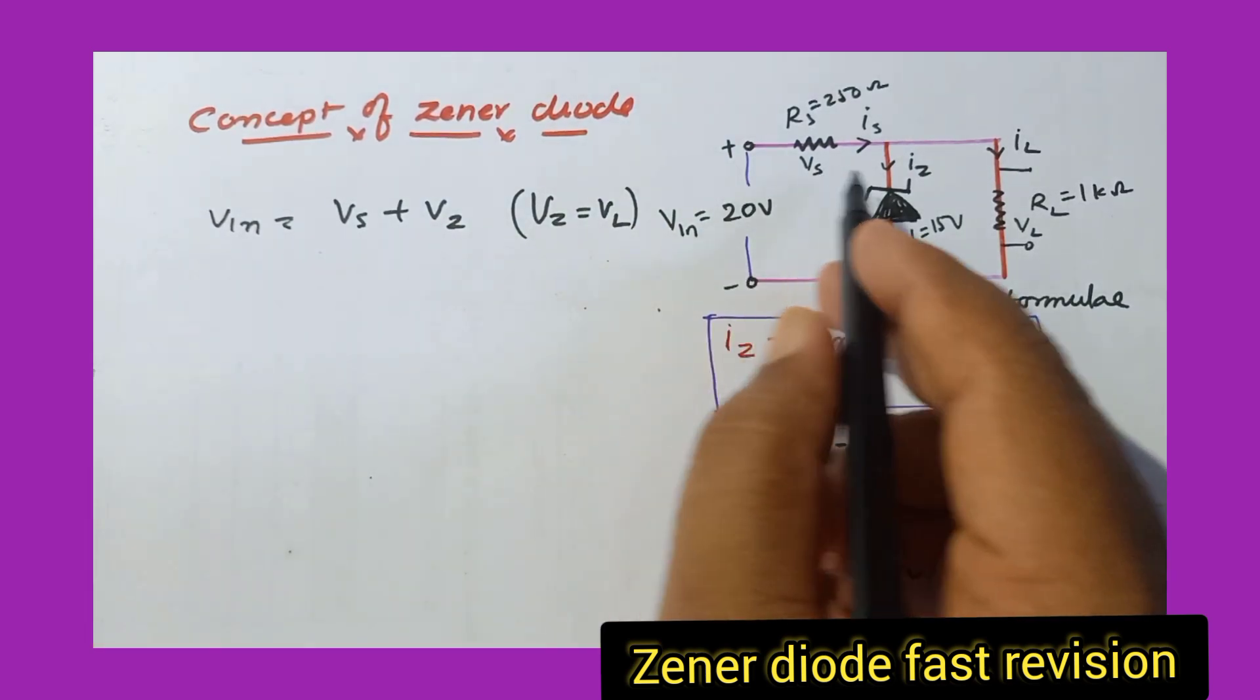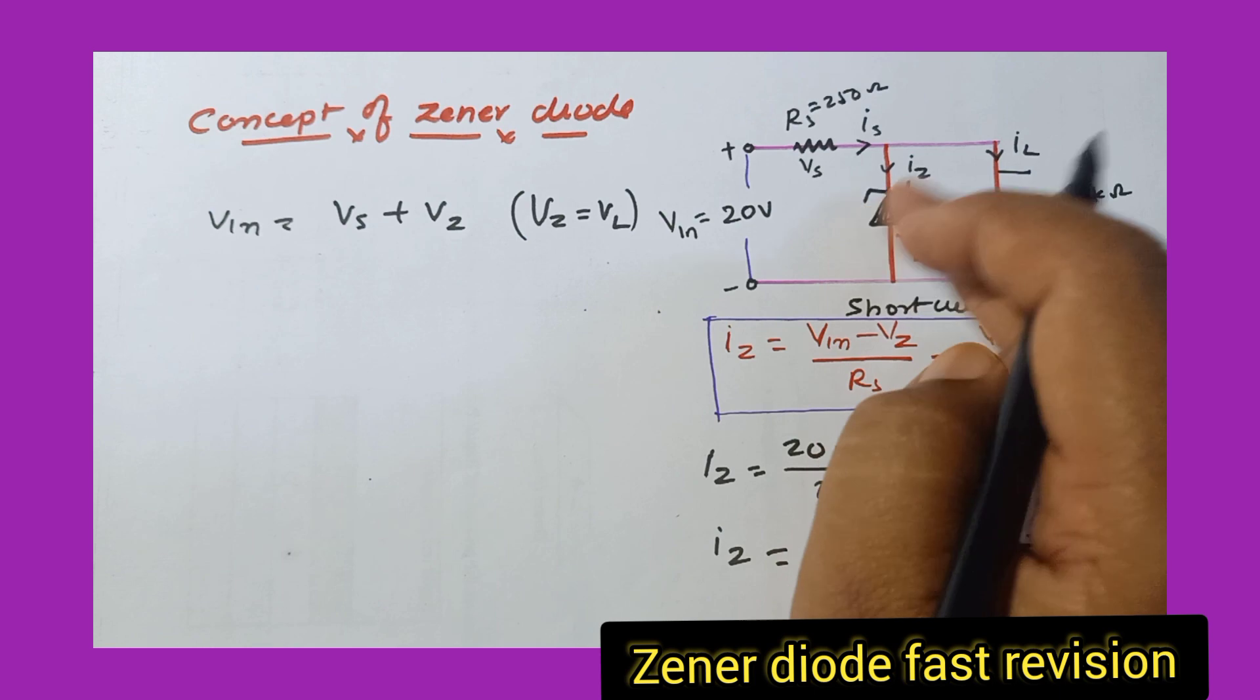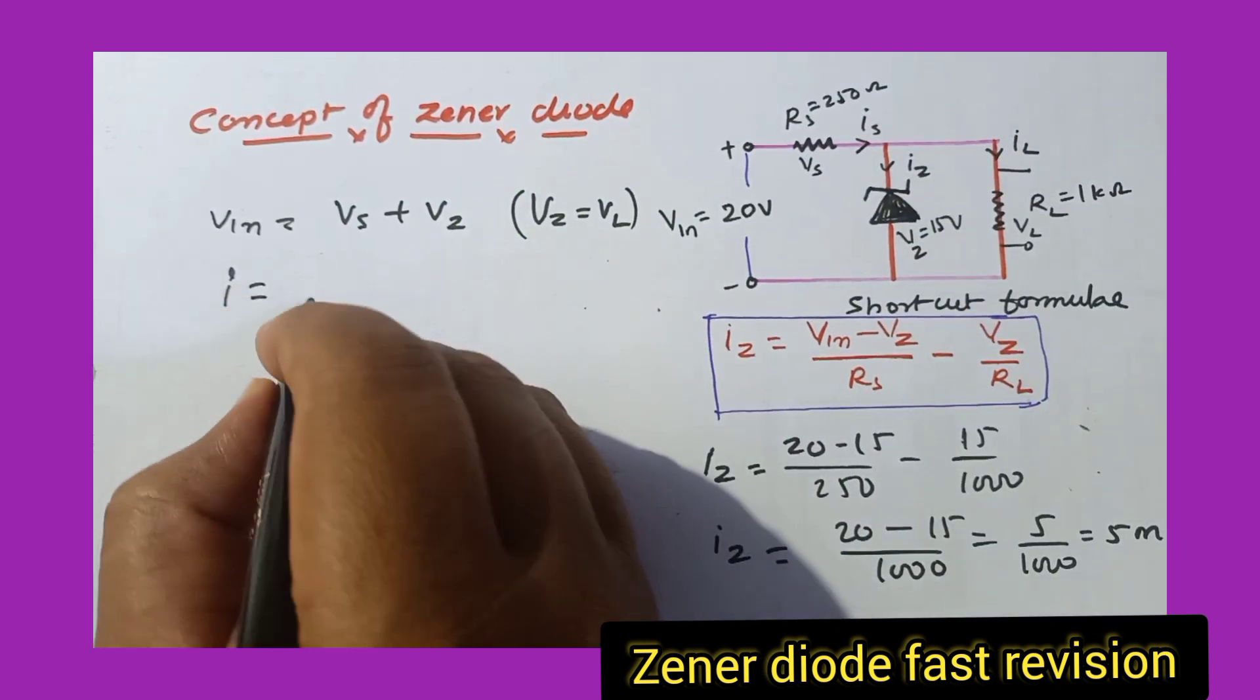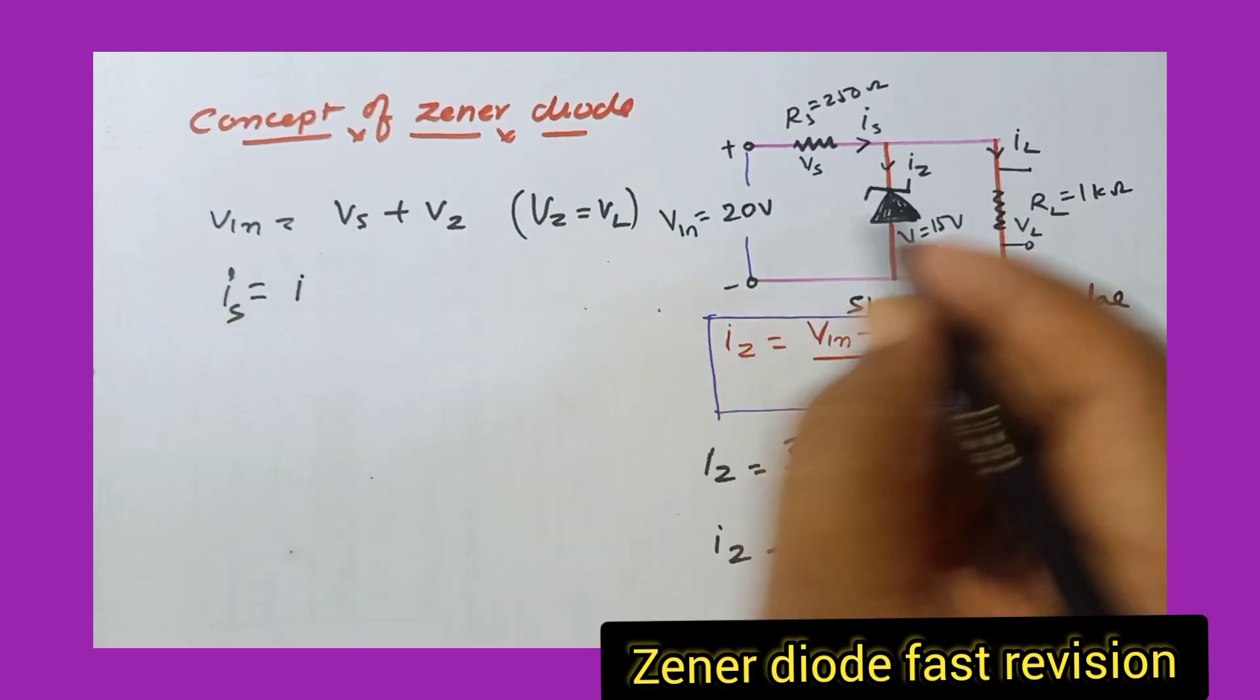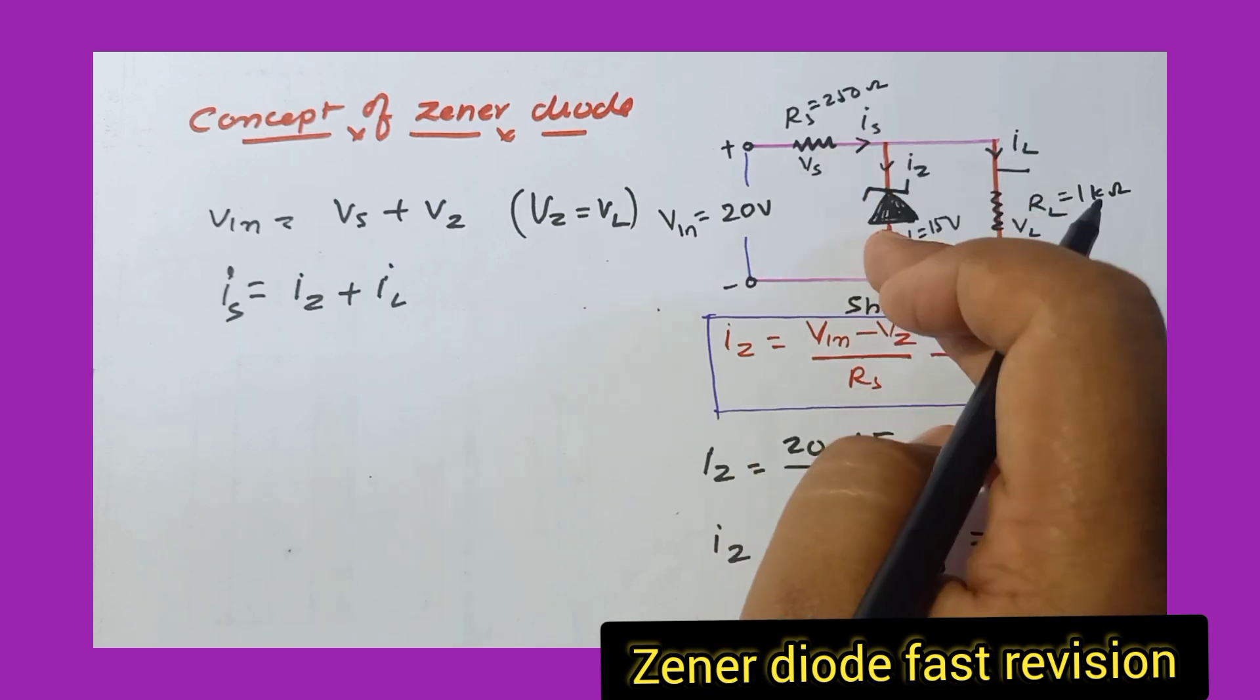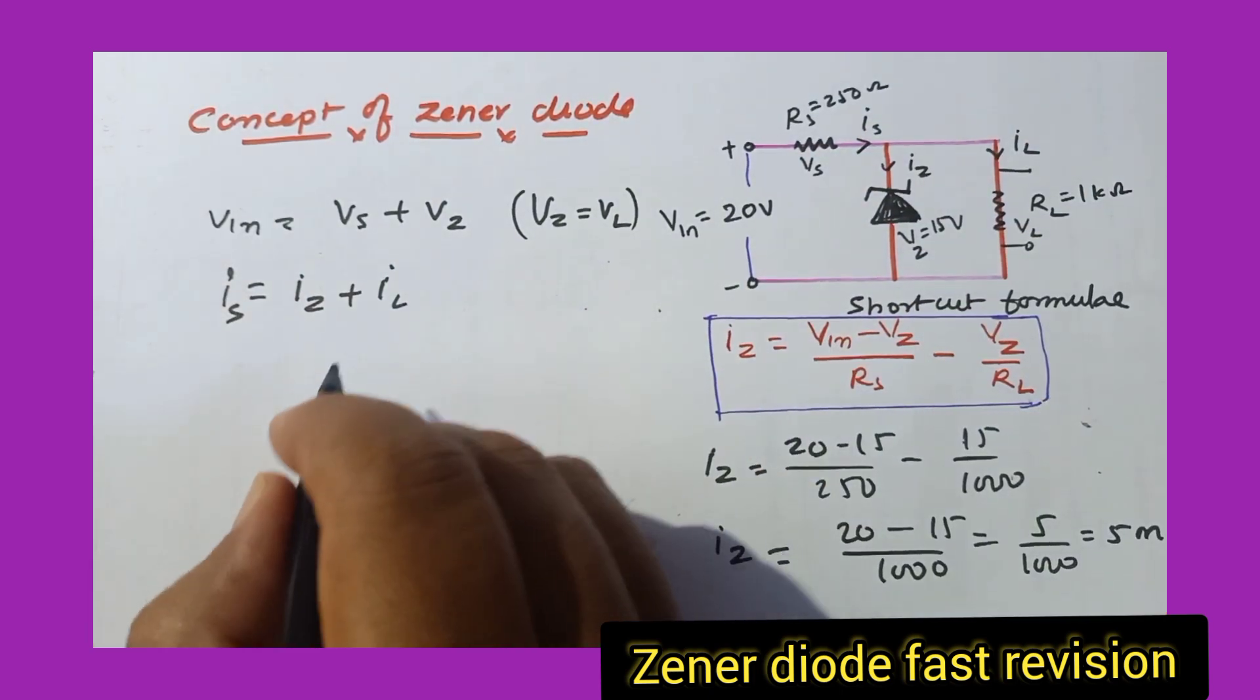Then after that, you can also write one more equation. That is, whatever current is passing through the series resistance gets divided along Zener diode as well as load resistance. That means one more step you can write, that is Is = Iz plus Il. So current passing through Zener diode and current passing through the load resistance is getting divided along the two branches.